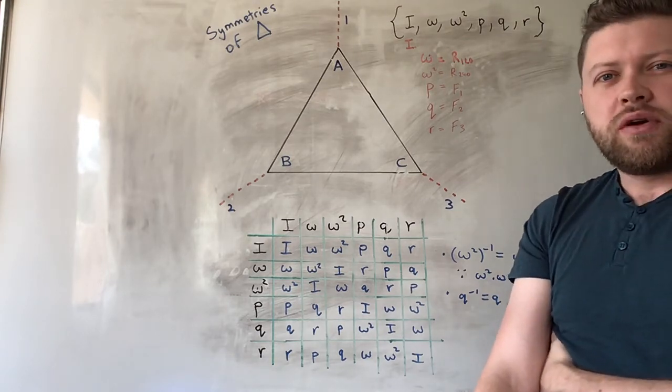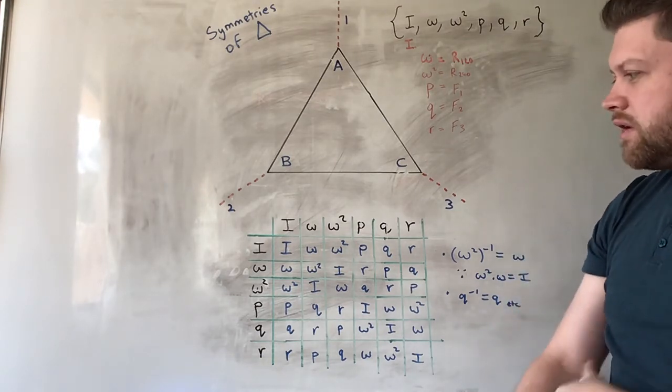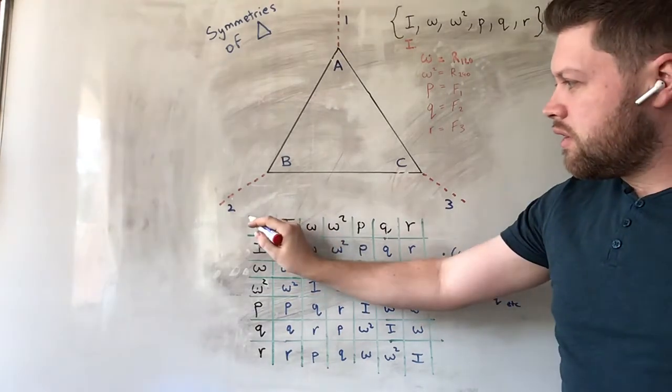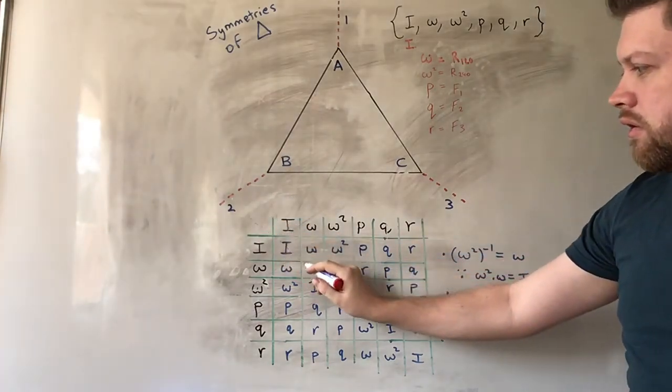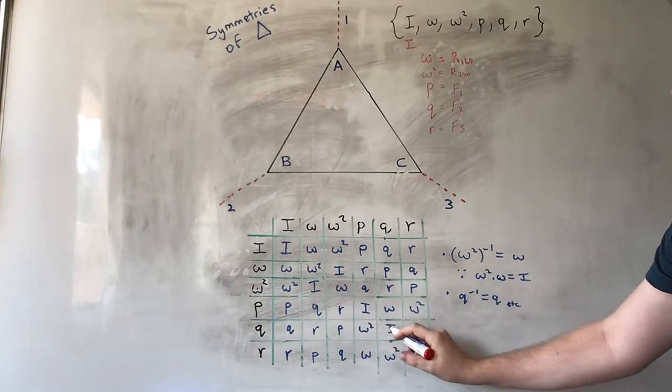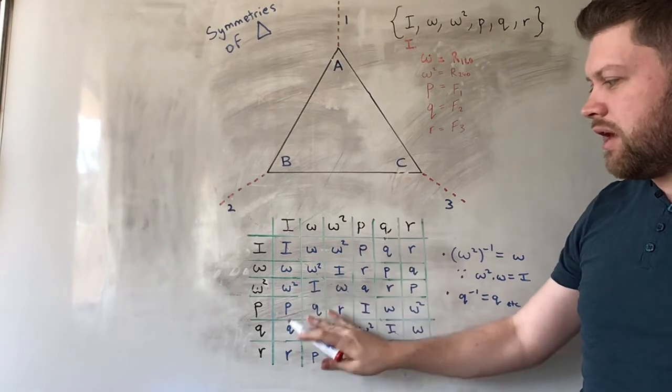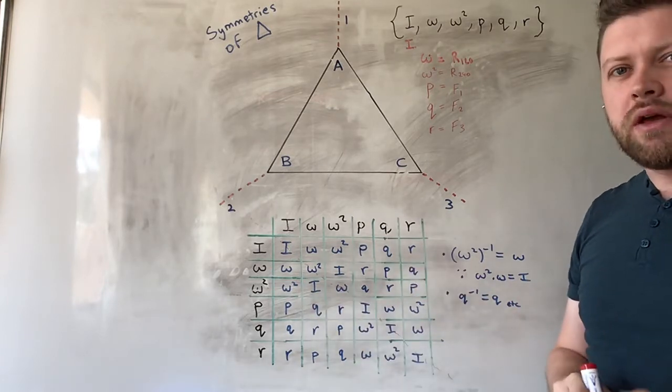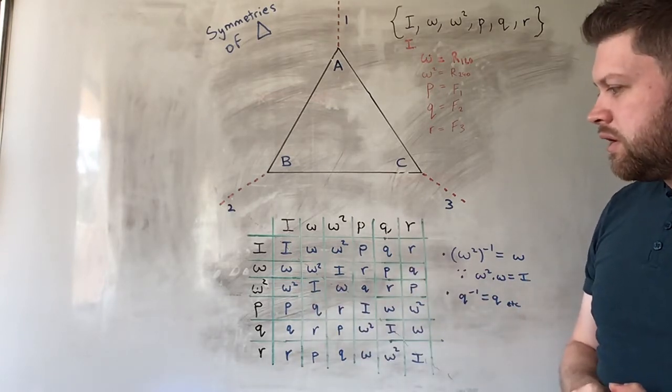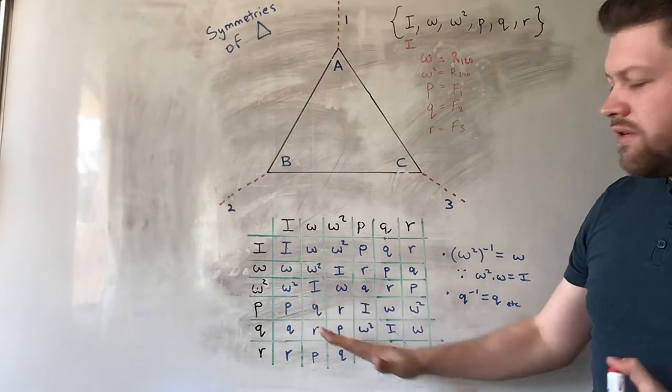There's one other interesting thing to point out, though. And that's that if you draw the line, the diagonal, down along here, and you examine the bottom and top halves of this table, you'll notice something.